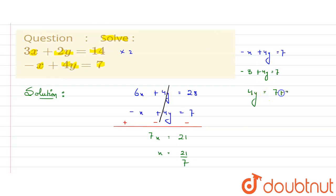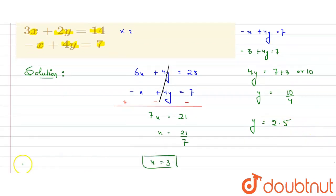4y will be equal to 7 plus 3, or we can say 7 plus 3 is 10. So y will be equal to 10 upon 4. From solving this, we get that the value of y will be equal to 2.5. So x is 3 and y is 2.5. Thank you.